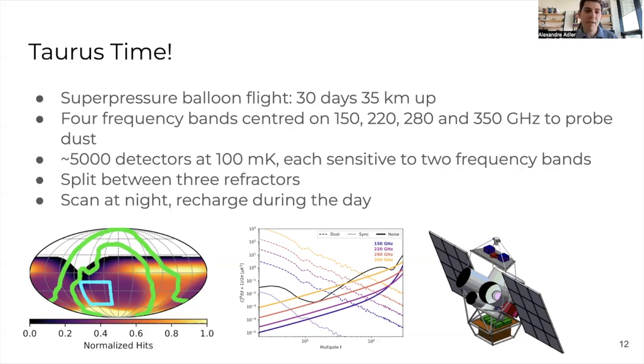We will have 5,000 detectors cooled down to 100 millikelvin, each of which will be sensitive to two of the four frequency bands. We will split those detectors in three focal planes that will be in three different refractors. The two large optics tubes are going to be for the 150 and 220 detectors, and the small one will have all the 280 and 350 detectors.